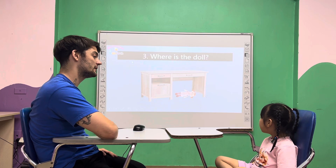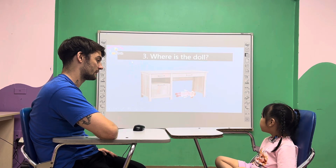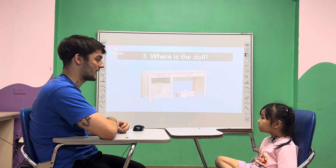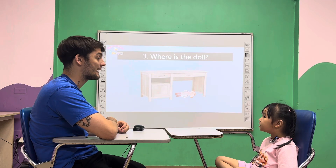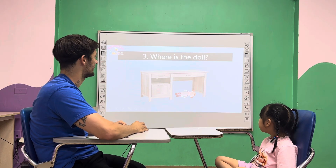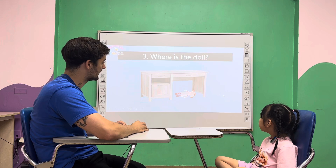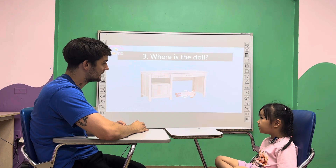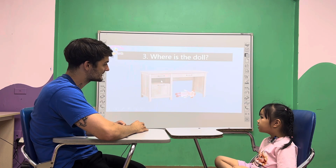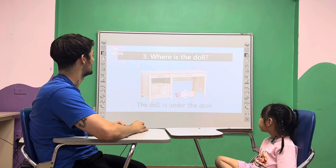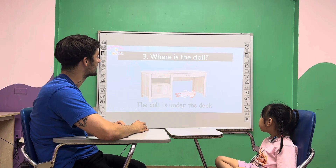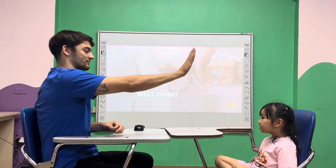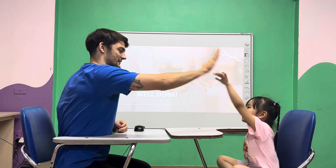Where is the dog? The dog is under — under. This is — what's this? The desk. The dog is under the desk. Correct. Well done. All right.